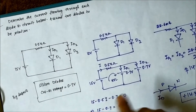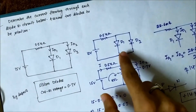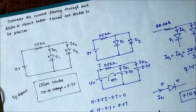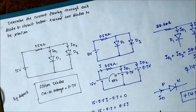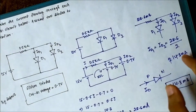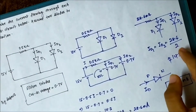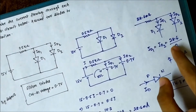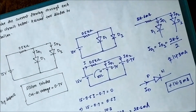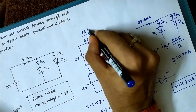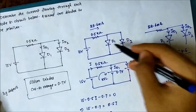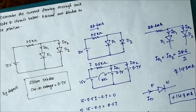The important concept to note here is: whenever you come across identical diodes connected in this fashion, regardless of whether they are silicon, germanium, or any other type, the current gets equally divided through them. If there were three identical diodes, the current would be 28.6 divided by 3 milliampere each. If four, then 28.6 divided by 4 each. Here with two identical diodes, the 28.6 mA divided equally into 14.3 mA through each of D1 and D2.